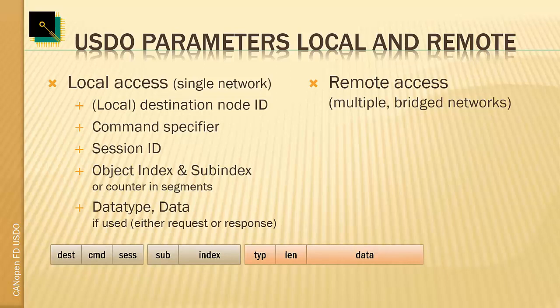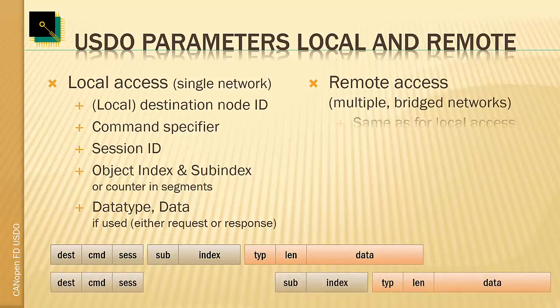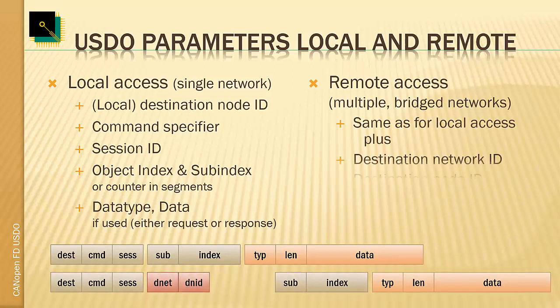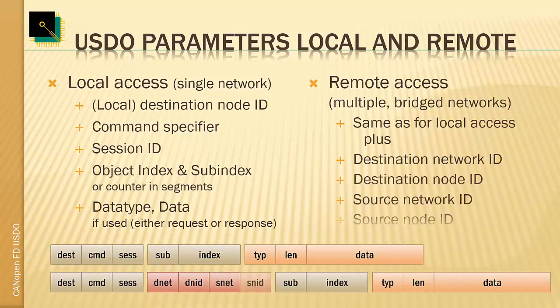For all remote access - USDO requests and responses beyond the local CANopen FD network - we have four additional parameters: the destination network ID, the destination node ID, the source network ID, and the source node ID. With these four parameters we can always determine where the message comes from (which node in which network) and where it is going to (which network and which node ID).